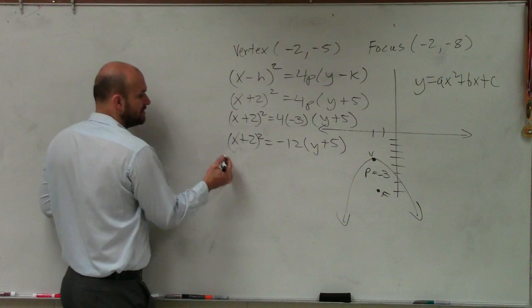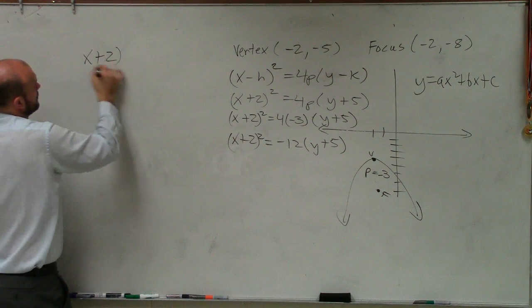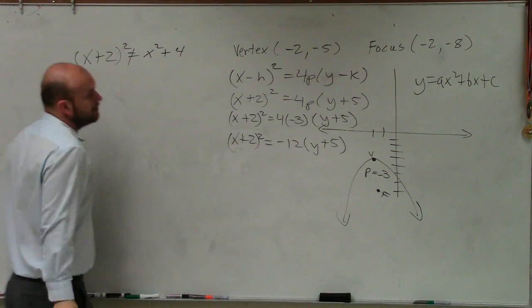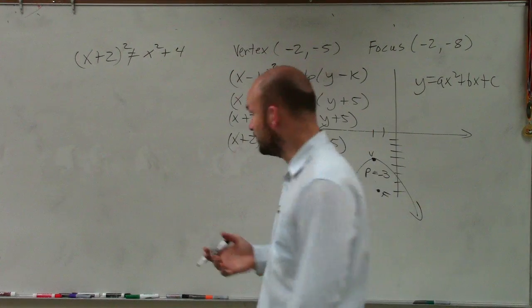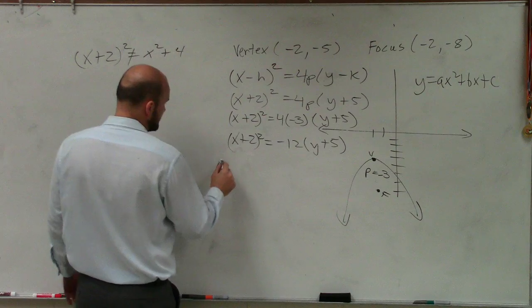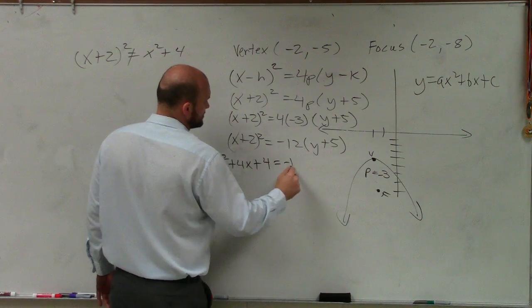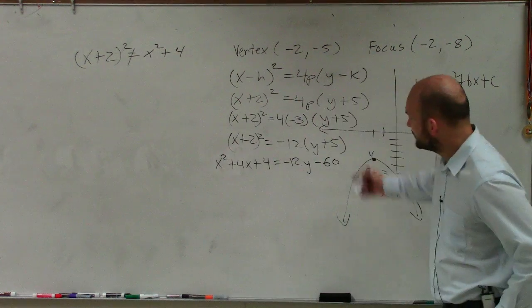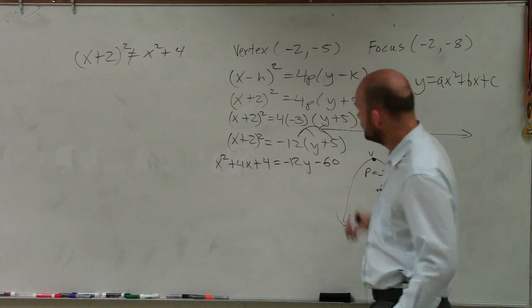So a binomial squared, please remember my biggest pet peeve. A binomial squared is x plus 2 times x plus 2. You have to apply FOIL. So x plus 2 squared is going to be x squared plus 4x plus 4 equals negative 12y minus 60. So what I did was I expanded that out, and then I applied distributive property.